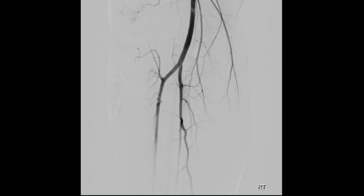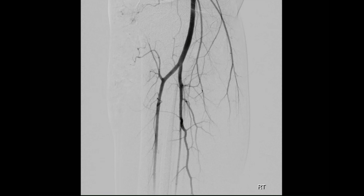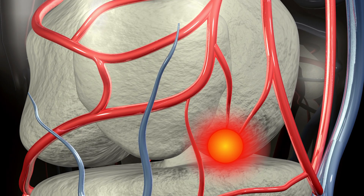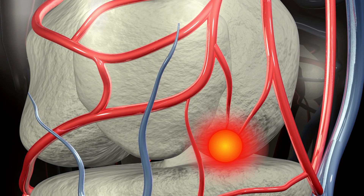We make a tiny nick in the skin and put a very small tube into the artery. We then inject contrast media or dye to take pictures of the blood vessels. This confirms that you have good blood flow to the foot and then identifies the arteries that go to the knee joint. We then take a small catheter that's about a millimeter and a half in diameter and steer that under live x-ray into the arteries that go to the knee joint.